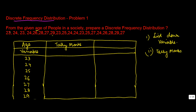Let's do that. We've got 23 — one tally mark; 24 — one here; 26; 26; 28; 27. You have to be very careful as you are marking these. 29 — one. You must use a lined paper as you do this. 23; 25 — the first one goes here.